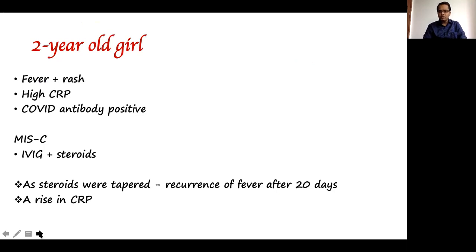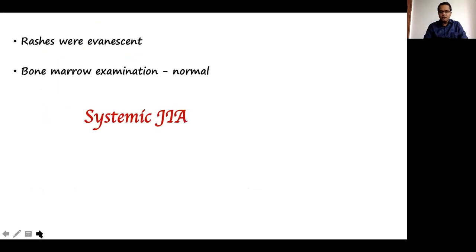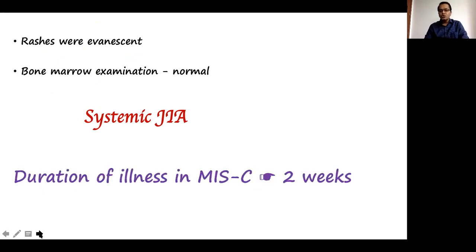A two-year-old girl had fever, some rashes, high CRPs, and a positive COVID antibody — she was said to have MIS-C and started on IV steroids. As steroids were tapered, she had recurrence of fever after 20 days with a further rise in CRP. The referring pediatrician asked: is this ongoing or relapsing MIS-C? The rashes here were evanescent — appearing only during fever episodes, which is not seen in MIS-C. Bone marrow examination was normal, and she was diagnosed with systemic juvenile idiopathic arthritis. This highlights that MIS-C typically lasts two weeks and never more than three weeks — ongoing fevers beyond that point are not MIS-C.